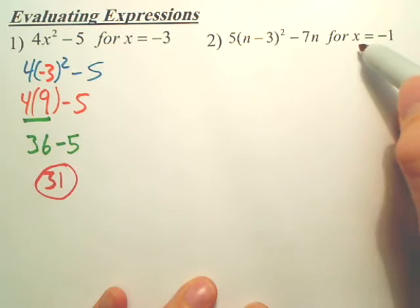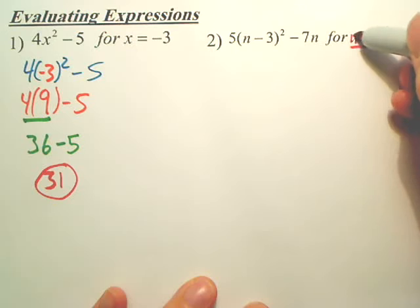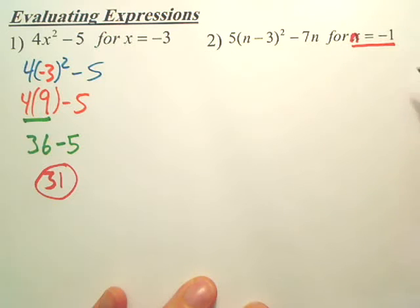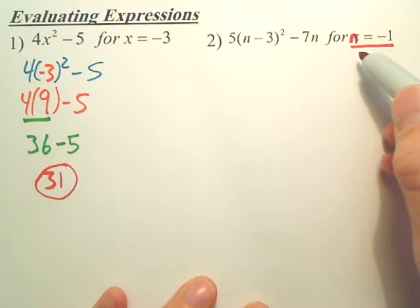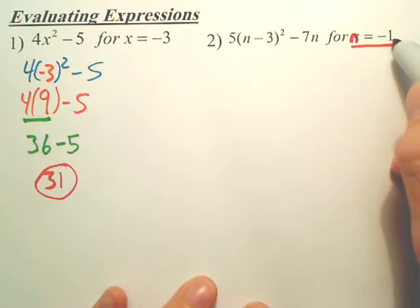So this one, you are going to plug negative 1 in for? There is no X. Let's change this to an N. That's a good observation. If that was X, you can't plug it in because it's not X. N is negative 1.